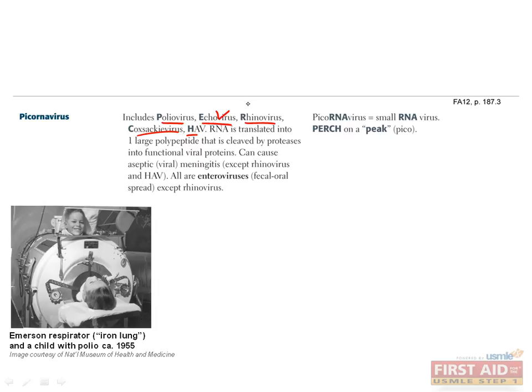Echovirus is another virus acquired through fecal-oral transmission. It can cause a wide spectrum of illness, from rashes and myofibril illnesses to aseptic meningitis. Suspect echovirus in patients who present with meningitis during the summer to fall months, without the classic CSF profiles of a patient with bacterial meningitis.